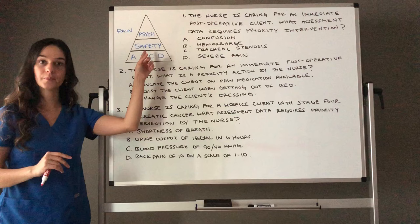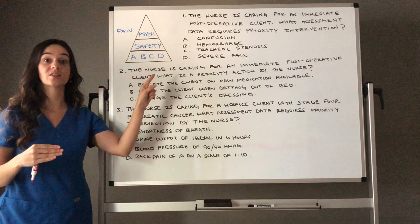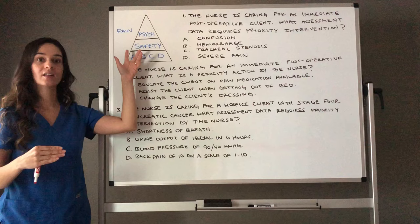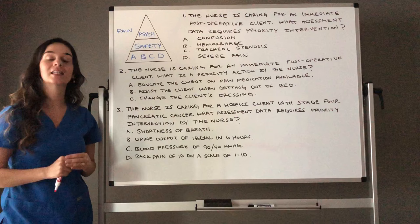A depressed client who states 'I don't see the need to live anymore' — that is no longer psychosocial; it is now a safety problem, and you treat it as such. So this is how I view my nursing pyramid and assign levels of priority: airway over breathing, breathing over circulation, circulation over change in behavior. Airway and breathing trump safety, but a safety issue trumps a psychosocial problem.